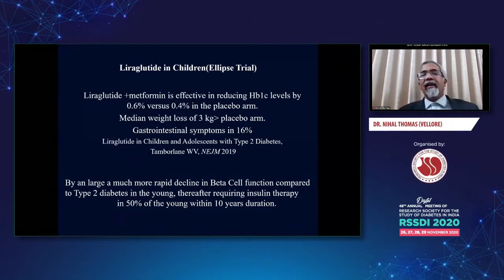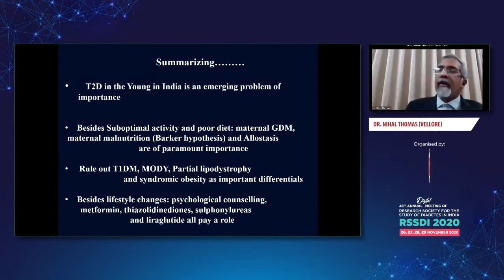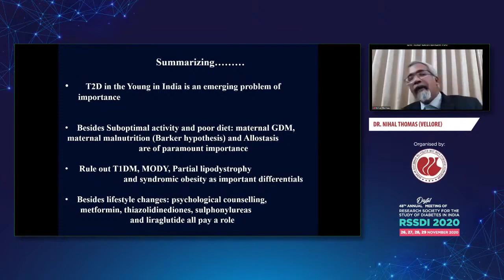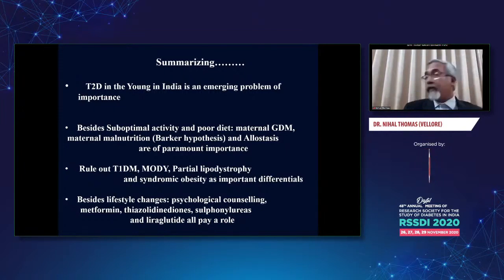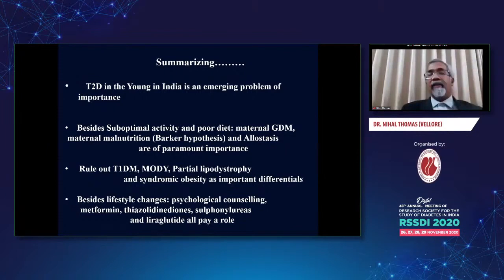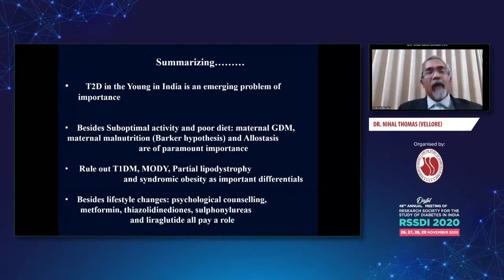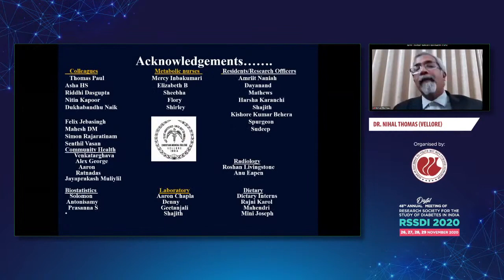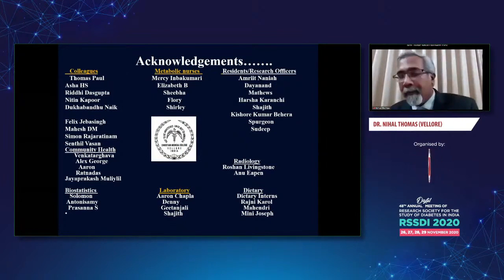In summary, type 2 diabetes in the young in India is an emerging problem of importance. Besides suboptimal activity and poor diet, maternal GDM, maternal malnutrition, and allostasis are of paramount importance. Rule out type 1 diabetes, MODY, partial lipodystrophy, and syndromic obesity as important differentials — partial lipodystrophy being very difficult to rule out at times. Besides lifestyle changes and psychological counseling, metformin, thiazolidinediones, sulfonylureas, and liraglutide all play a role. I'd like to acknowledge our team of researchers, clinicians, lab people, genetic lab staff, as well as residents and nurse educators who have helped us with our work. Thank you very much for your patient listening.